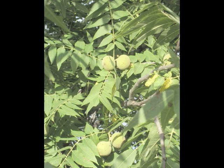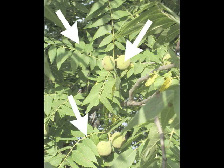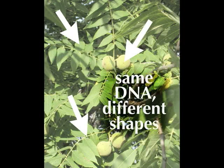Look at this wild walnut tree. In addition to the round walnut fruits, the tree has sheets for leaves and tubes for stems and branches — a number of fundamentally different shapes. But all its cells have the same DNA. So these different shapes were all chosen in an evolutionary sense from a list of possibilities. The sphere must be there for at least one very good reason.